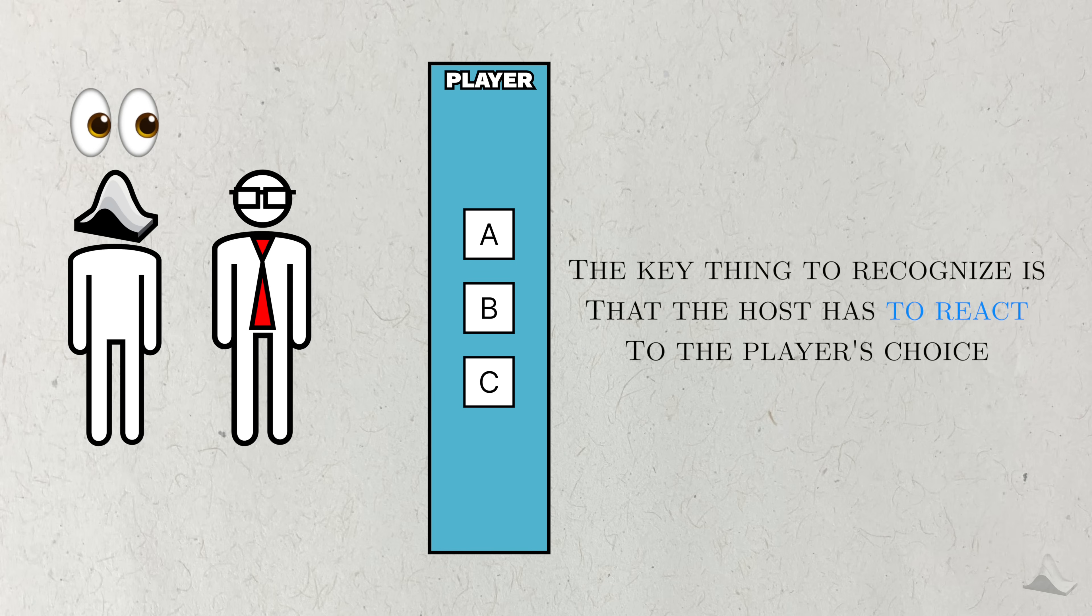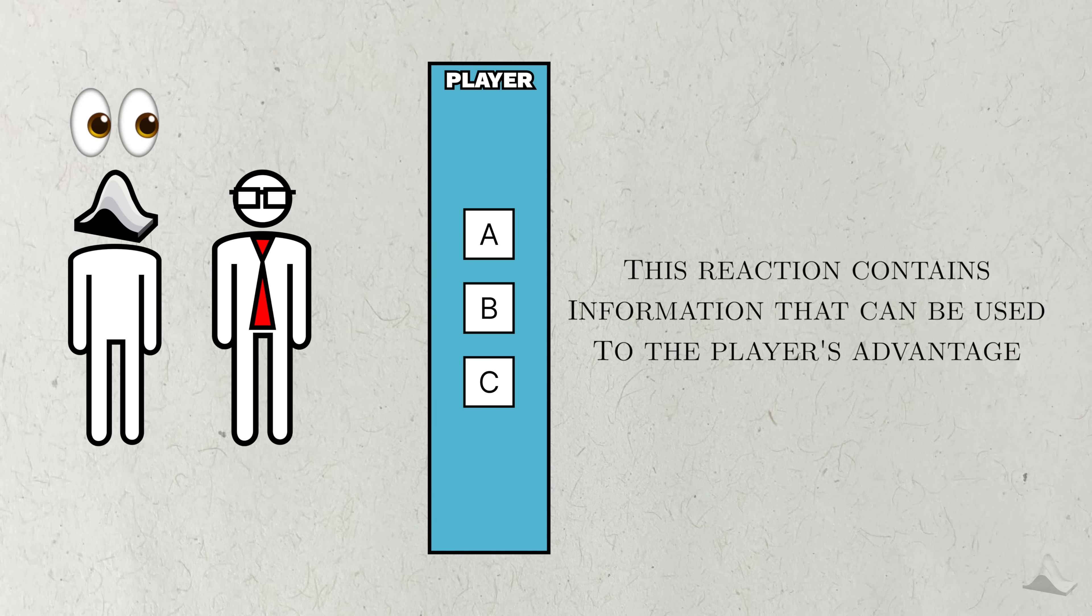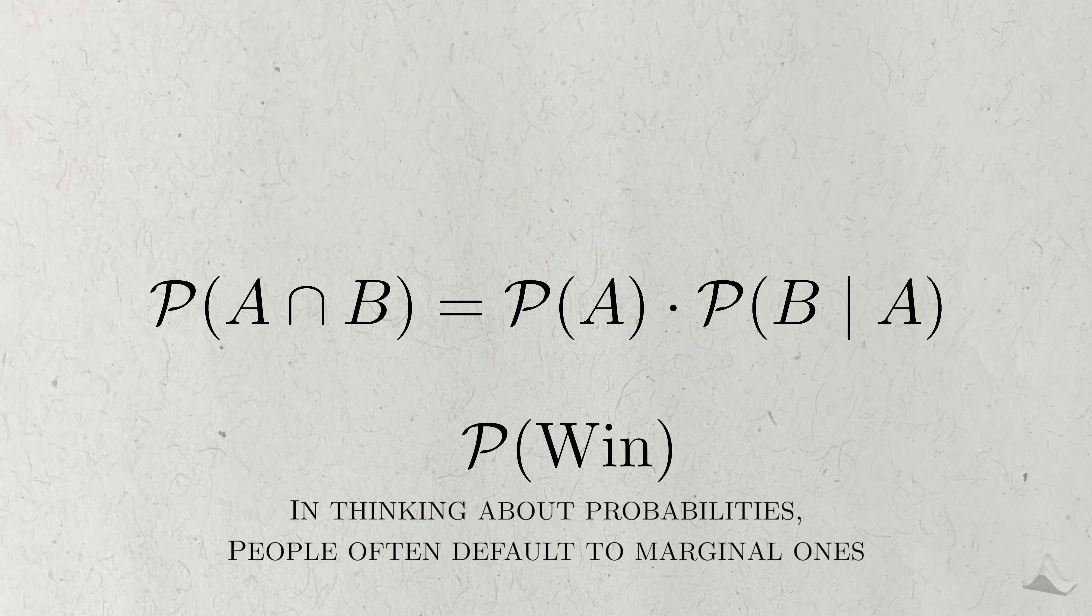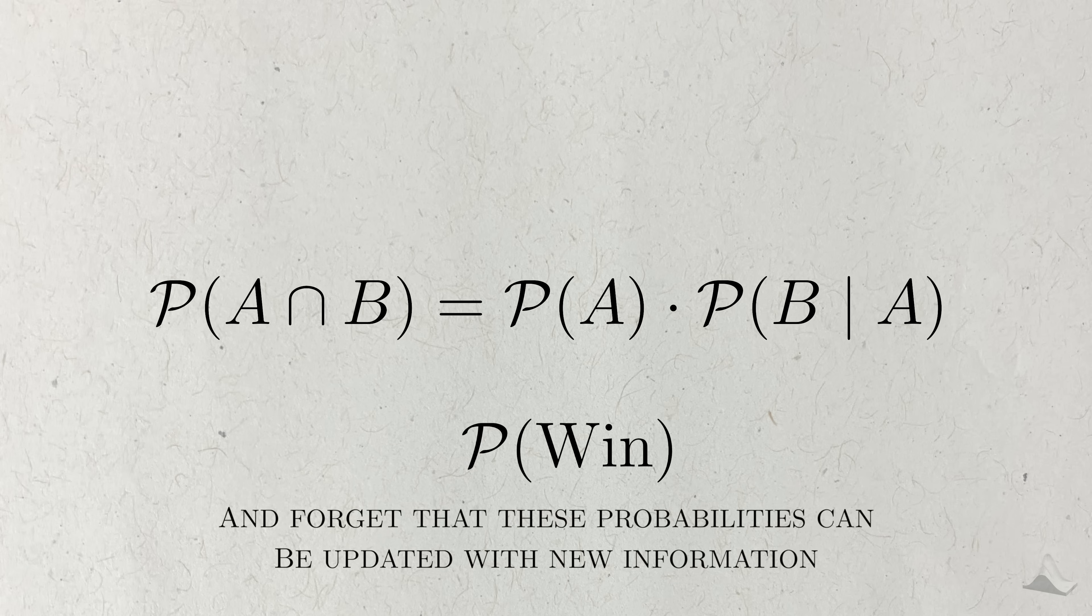But the key thing to recognize is that the host has to react to the player. His reaction actually provides information that can be leveraged to the player's advantage. And this information is encoded in the form of a joint probability that accounts for both what the player did and what the host did. When people think about probability, they often default to raw, marginal probabilities. They forget that these probabilities can be updated with new information via Bayes rule.